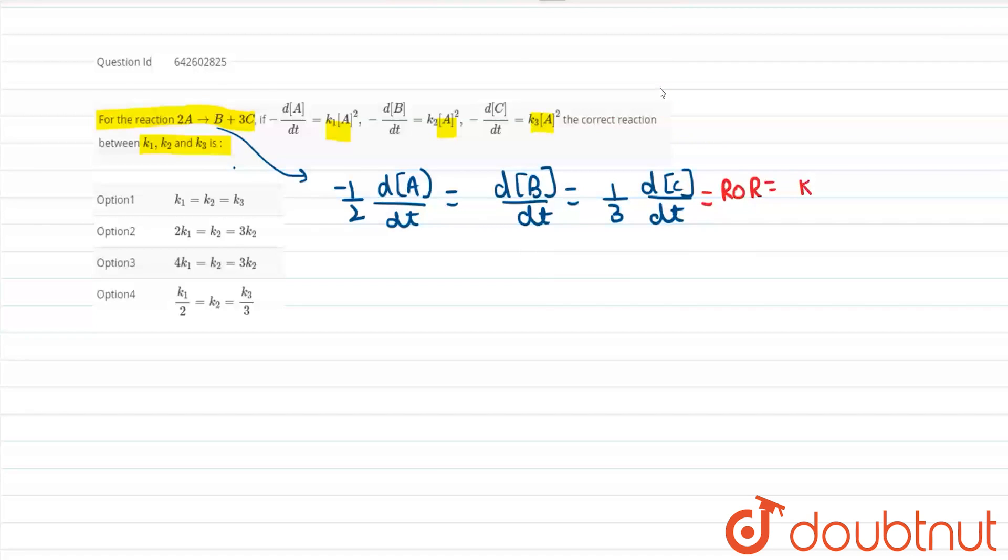So this is equal to, let me assume k, the general rate constant into A², considering it an elementary reaction.